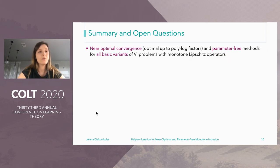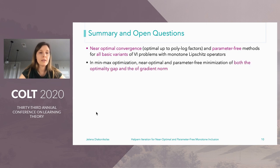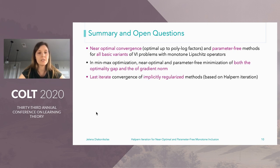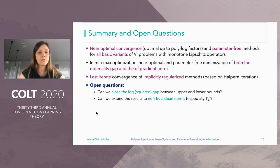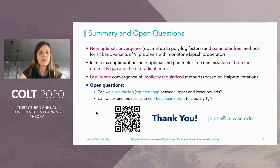To summarize, we obtained near-optimal and parameter-free methods for all basic variants of VI problems and monotone inclusion problems with Lipschitz operators. For min-max optimization, this means we get guarantees for both the optimality gap and the gradient norm, and these results are for the last iterate using an implicitly regularized method. Open questions include closing the log-squared gap between upper and lower bounds and extending these results to non-Euclidean norms. Thank you very much for your attention.